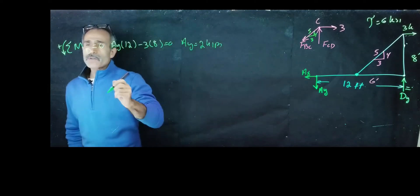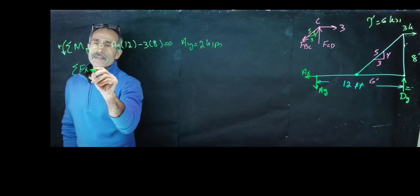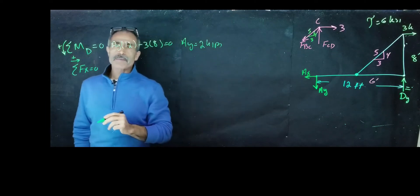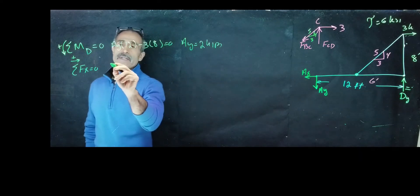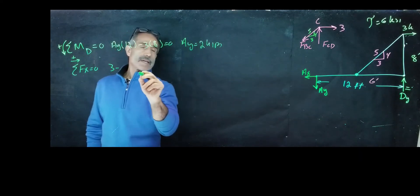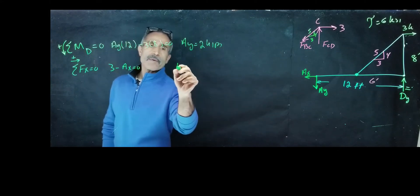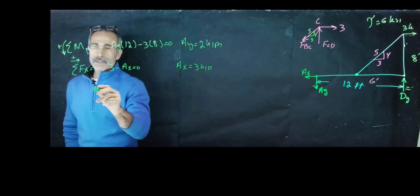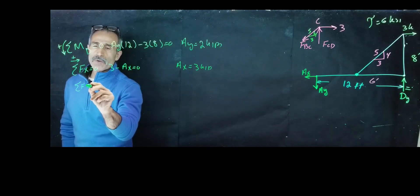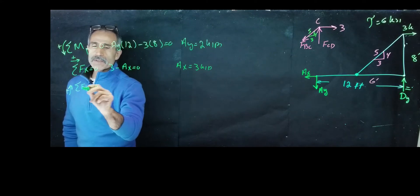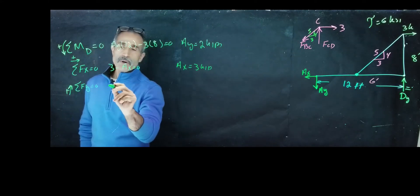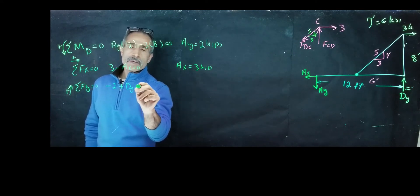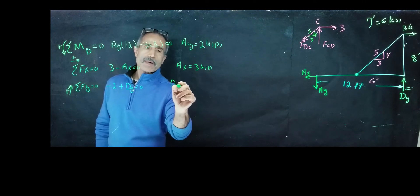Now then we're going to do summation Fx equals zero. We have 3 minus Ax equals zero. Ax comes out to 3 kips. The next one we have is summation Fy, which we don't need for this problem, but anyway equals zero. We have Ay, which is minus 2 plus Dy equals zero, so Dy comes out to 2.